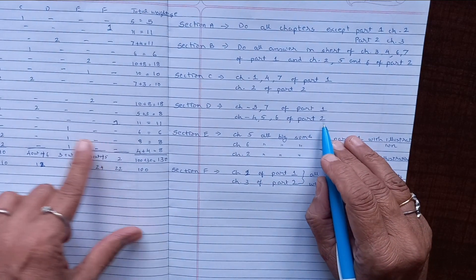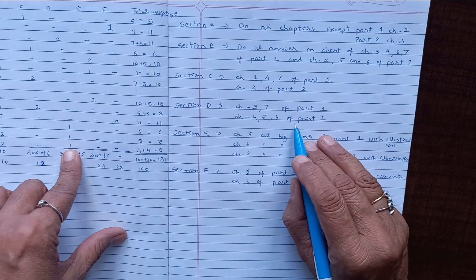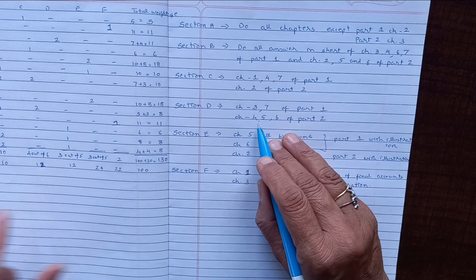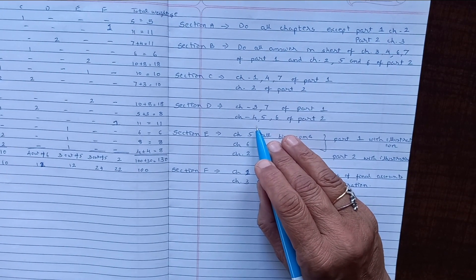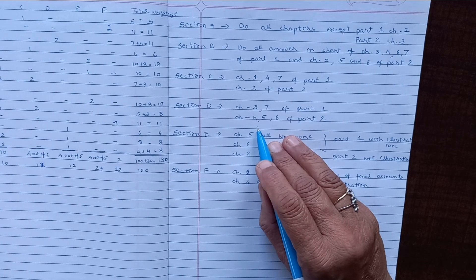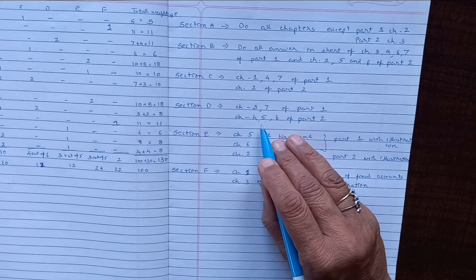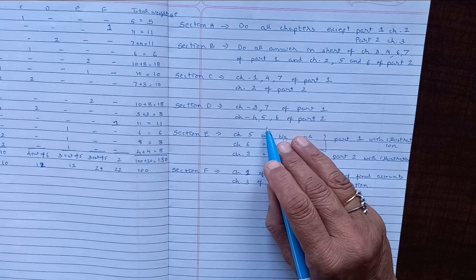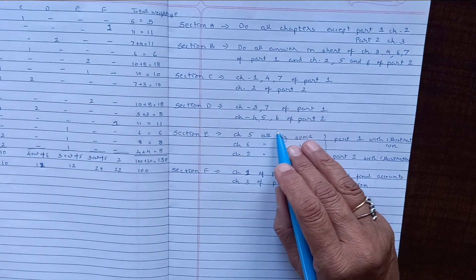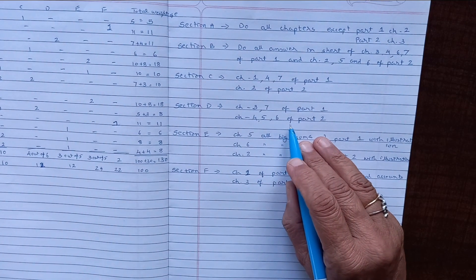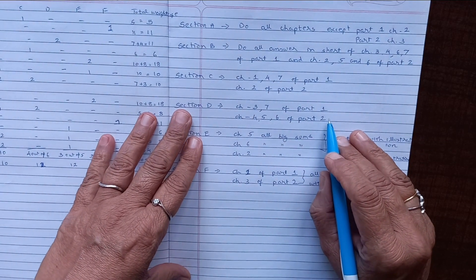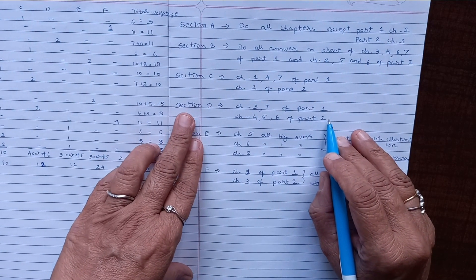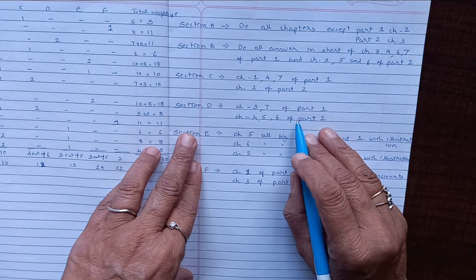Chapter number 4, 5, and 6 of part two—it means that for your four mark questions, you have to prepare chapter 4, 5, and 6: analysis of financial statement, your accounting ratios and analysis, and cash flow statement. Each and every exercise, that is D section questions, you are supposed to do with illustrations. Don't forget to do illustrations.